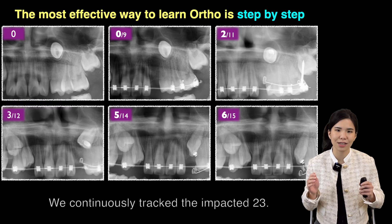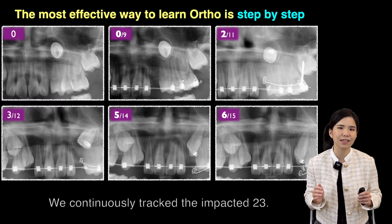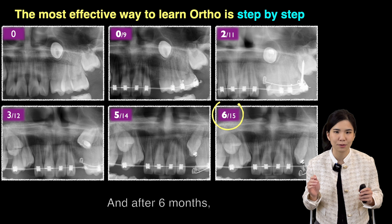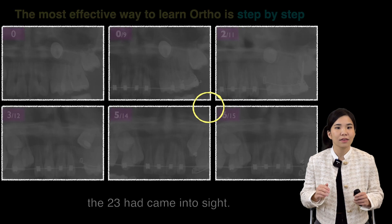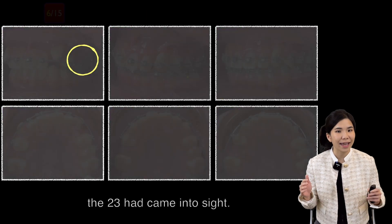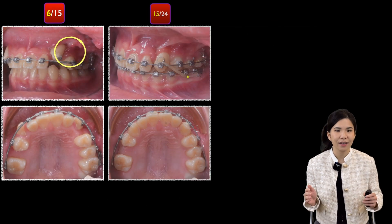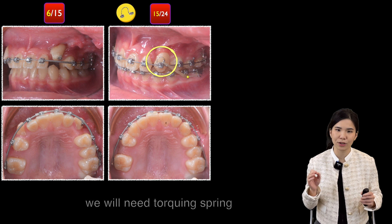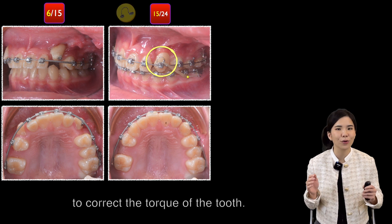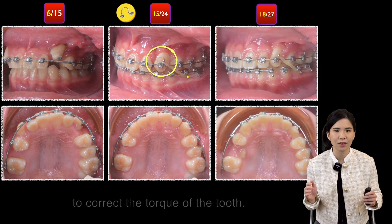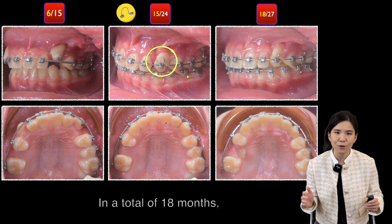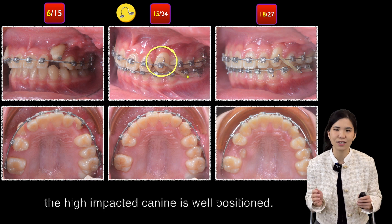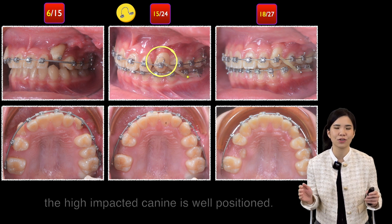We continuously tracked the impacted tooth 23, and after 6 months, it had come into view. Typically, a torquing spring is needed to correct the torque of the tooth, and in total, after 18 months, the high impacted canine was well positioned.